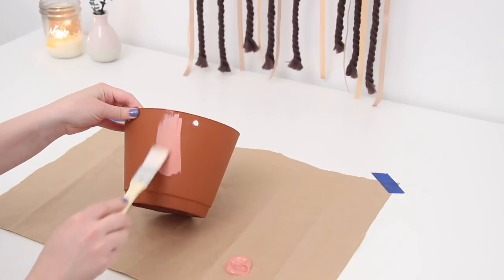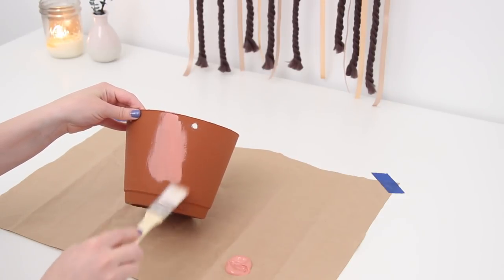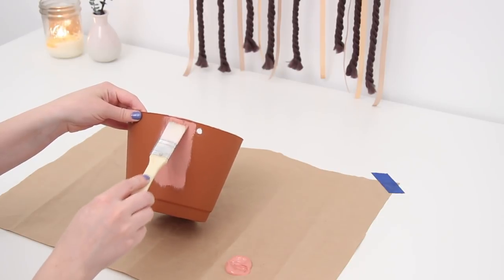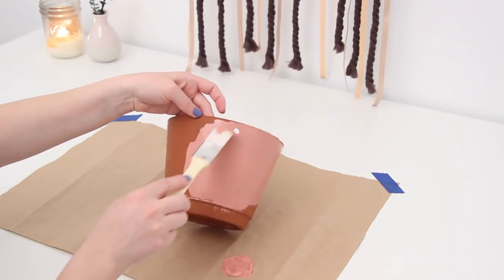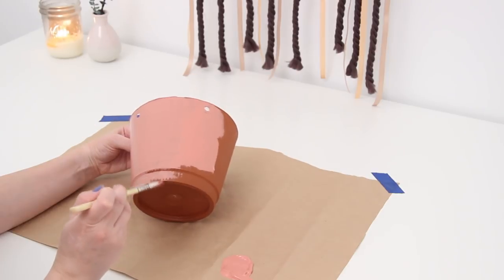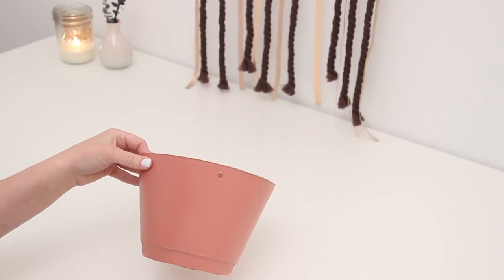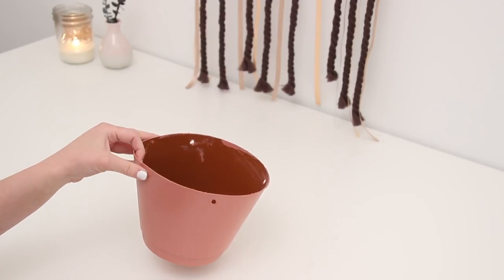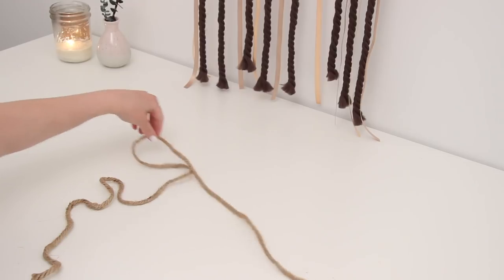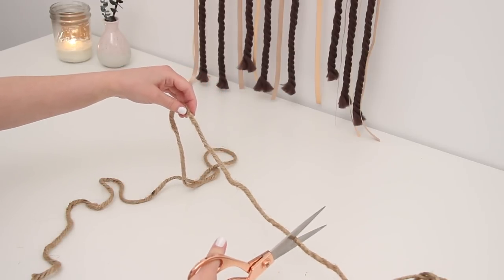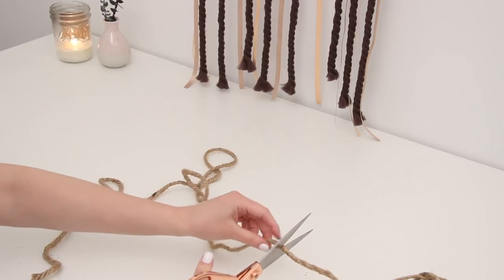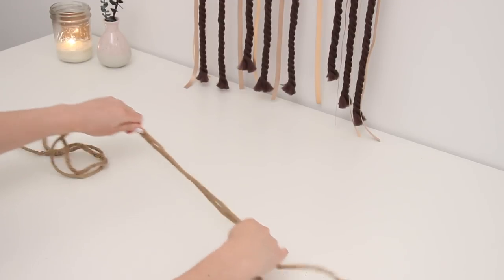I painted this with some pink acrylic paint. You can use any color you want. I gave it about two or three coats until it was fully covered. Let it dry and then added my rope. With the height of the rope, this is going to depend on where you're hanging your planter and how low you want it. I cut out one piece of rope and used it as a guide to measure my second piece.